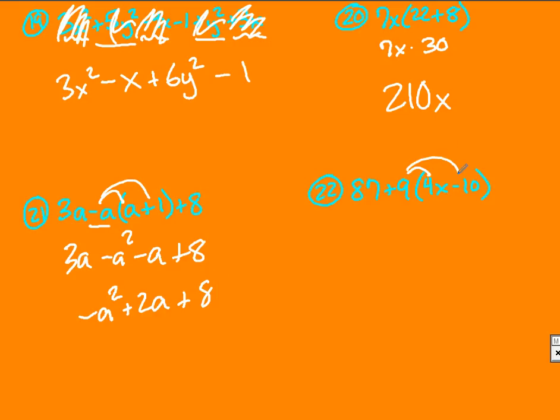Last one, another distributing. 36x and negative 90 when I distribute there. Combine my like terms. There's nothing to go with 36x, there's no other x's. 87 plus negative 90 is negative 3. And that's your final answer. Best of luck. Study well.